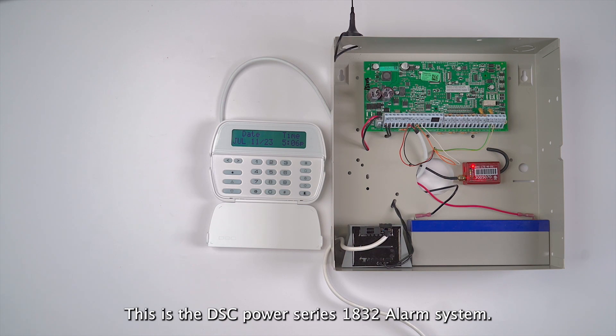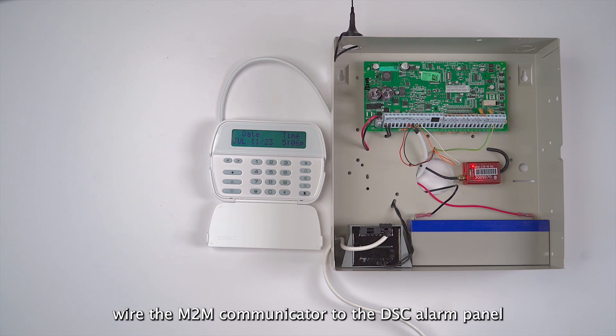Hello, this is the DSC Power Series 1832 alarm system. In this video I will show you how to wire the M2M communicator to the DSC alarm panel and how to program the panel for communication.